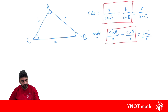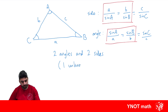We're going to use the sine rule when we have two angles and two sides, and one of these is going to be unknown. Let's look at an example of how we can do this.